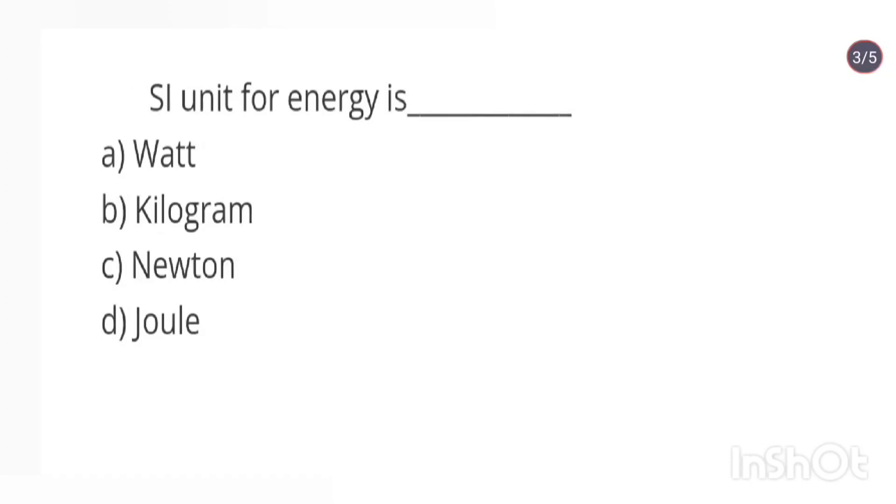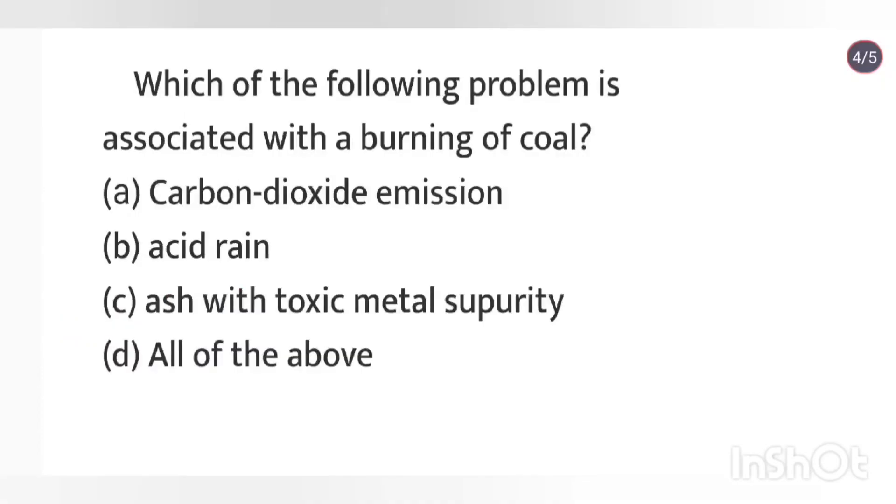SI unit for energy is joule. Which of the following problems is associated with burning of coal? Carbon dioxide emission, acid rain, ash with toxic metal impurity. The right answer is all of the above.